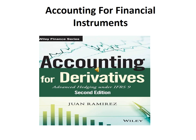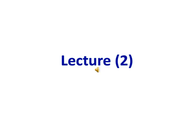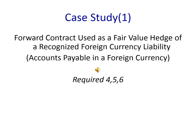Accounting for Financial Instruments, Lecture No. 2. This is Part 2 of our first case study, which is about forward contracts used as a fair value hedge of a recognized foreign currency liability, which is accounts payable in a foreign currency.